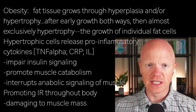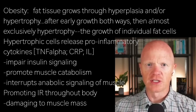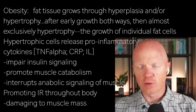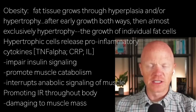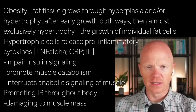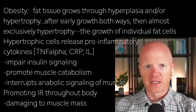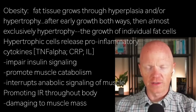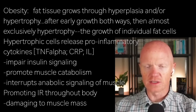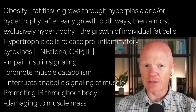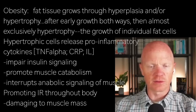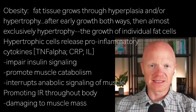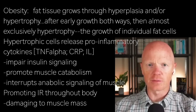That's why the increased size of the fat cell matters so much. As the fat cells become hypertrophic, they begin to secrete pro-inflammatory cytokines like TNF-alpha, C-reactive protein, interleukins — all of them. These cytokines impair insulin signaling. Inflammation is a cardinal cause of insulin resistance, but they also promote muscle catabolism. The result is a state of chronic low-grade inflammation that disrupts the anabolic signaling of the muscle, thereby promoting anabolic resistance.